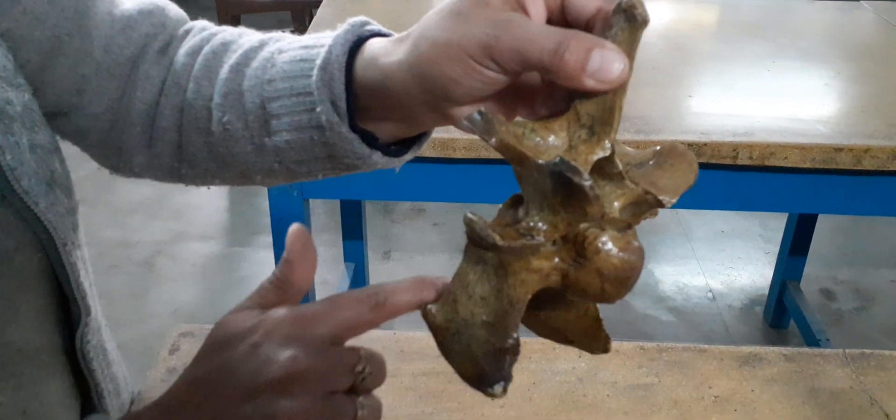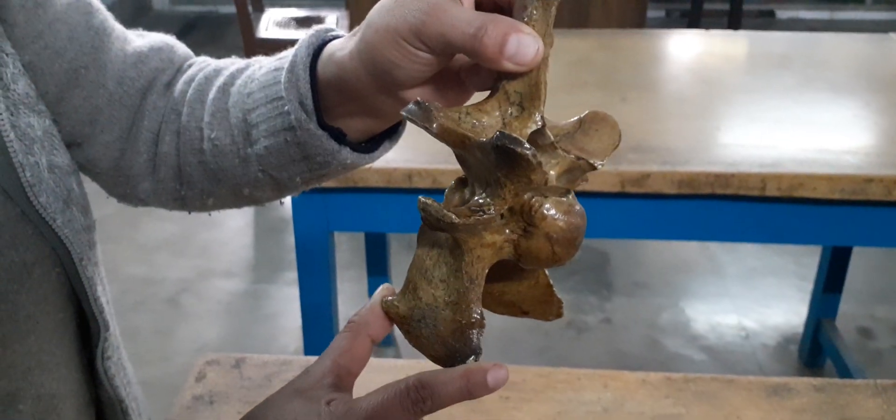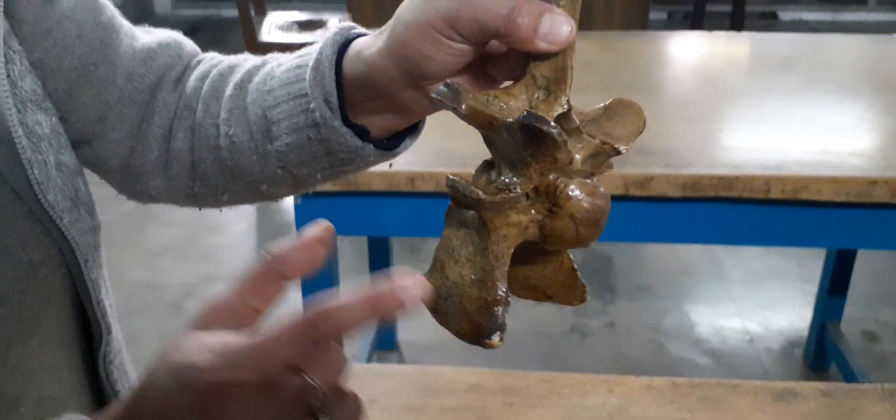And this entire is the transverse process. It is the dorsal branch of transverse process. It is the ventral branch of the transverse process.